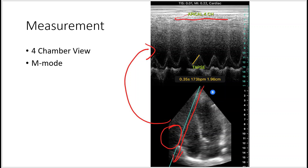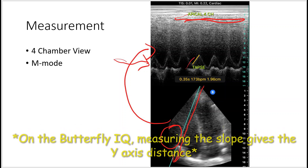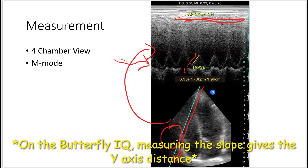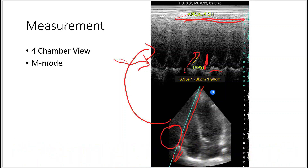So we have the apex up here, and these are the shortening of the tricuspid annulus when the heart contracts. You can measure the slope of the trough to peak, and this will give you the vertical distance. This heart measures 1.96 centimeters. I also want to point out that from here to here is when the heart is in systole.